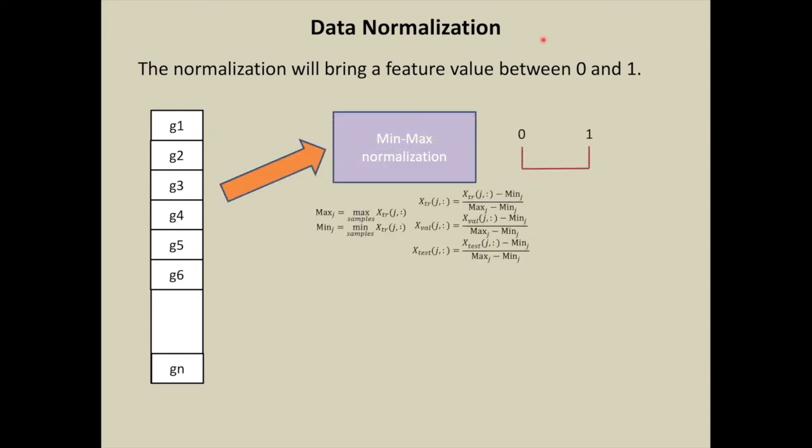Let us look at data normalization. The normalization will bring a feature value between 0 and 1, which is required for making an image-like sample. We have two options for normalization.